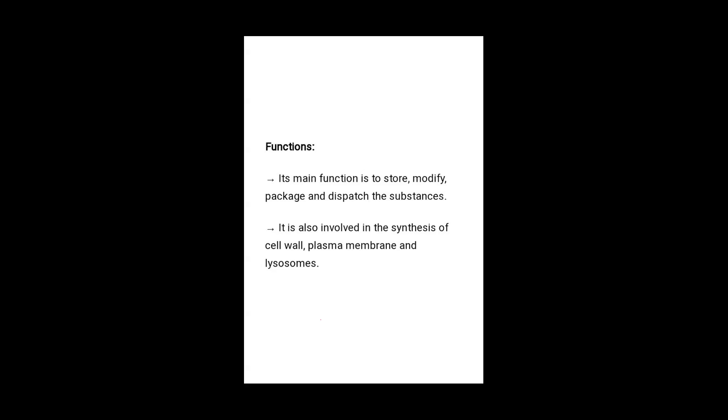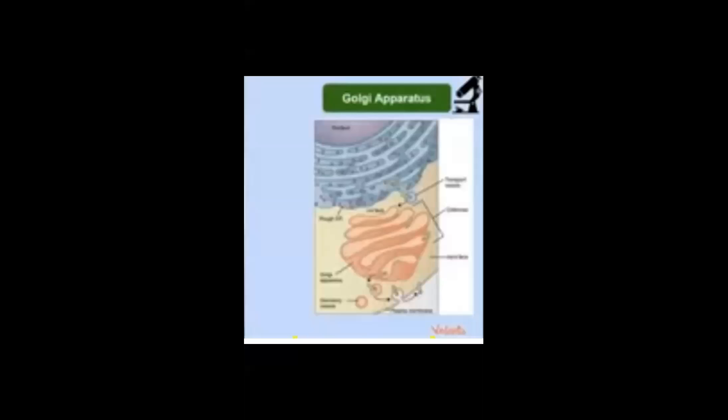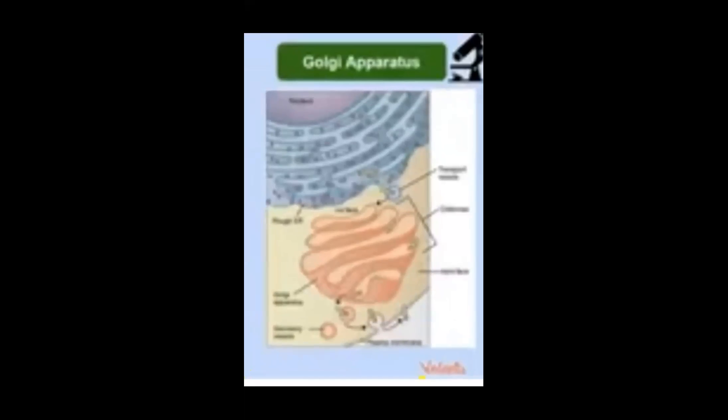Here is the diagram of the Golgi apparatus. It is located near the endoplasmic reticulum. The rounded structures in the diagram are vesicles, and the stacked cylindrical structures are the cisternae. The function of the vesicles is to dispatch and transport substances to where they are needed.